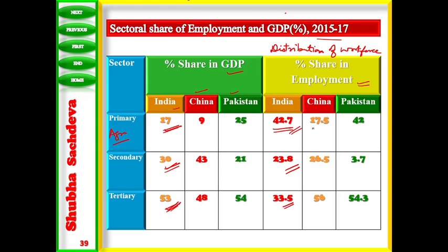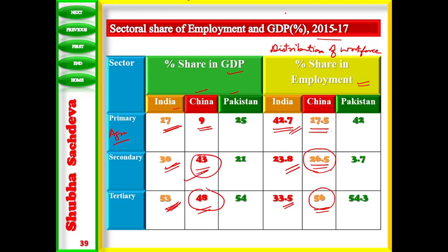Now comparing with China and Pakistan: in China, 17.5 percent of people are working in agriculture, contributing 9 percent share in GDP. 26.5 percent of people are working in the secondary sector, contributing 43 percent to GDP. 53 percent of the population is working in the tertiary sector, contributing 48 percent. So only 26.5 percent of people are giving 43 percent contribution — that means China's secondary sector is the biggest contributor relative to its workforce share.